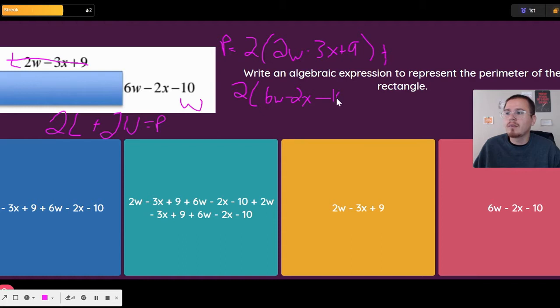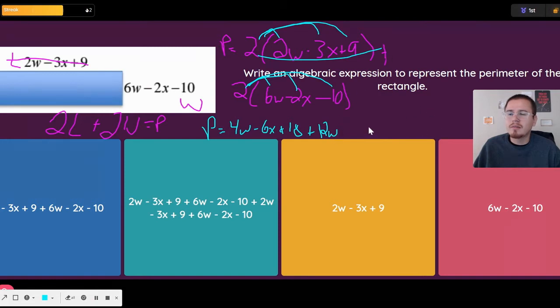All you're gonna have to do is simplify at this point to get the actual perimeter expression. You're gonna use what you know about distributive property and combining like terms. We're going to distribute the two in both cases. We're going to get P equals 4w, negative 6x, 18. We're done with the length. We're going to add 12w, negative 4x, and negative 20.